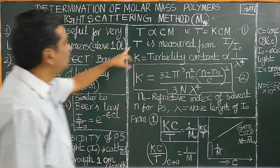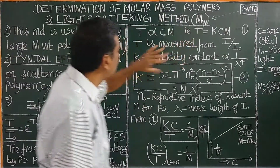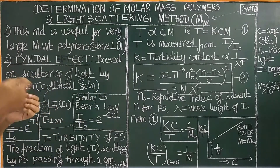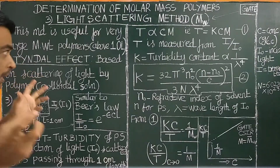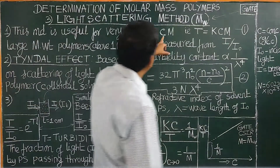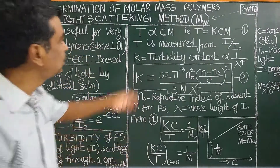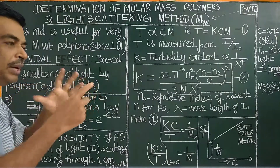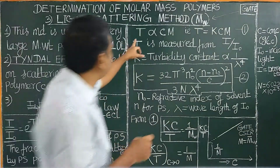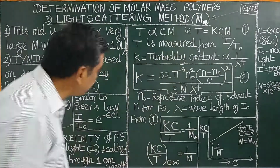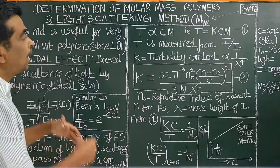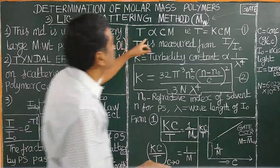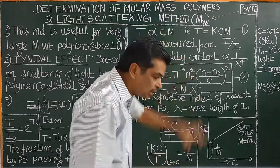Turbidity is directly proportional to concentration. Just as adding milk to water makes it turbid, turbidity is related to concentration. As molecular weight increases, turbidity increases. As concentration increases, turbidity increases. Therefore, turbidity is directly proportional to the concentration of the polymer.